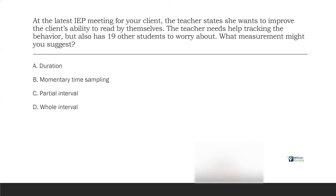So what we really want to do is look at whole interval. We have a one-minute interval, we're going to be looking at the client for that entire interval — maybe only 10 minutes at a time. We're trying to hit one minute; maybe that's too long, so we go to 20 seconds. But this way we get a clear indication: are we reading for an actual extended period of time, instead of just in the moment as momentary time sampling would be, or briefly as partial interval? So if we want to improve the ability to read by themselves, the discontinuous measurement to suggest is whole interval recording.